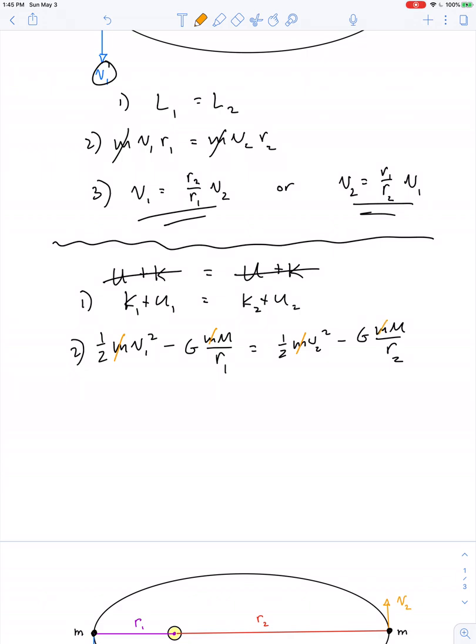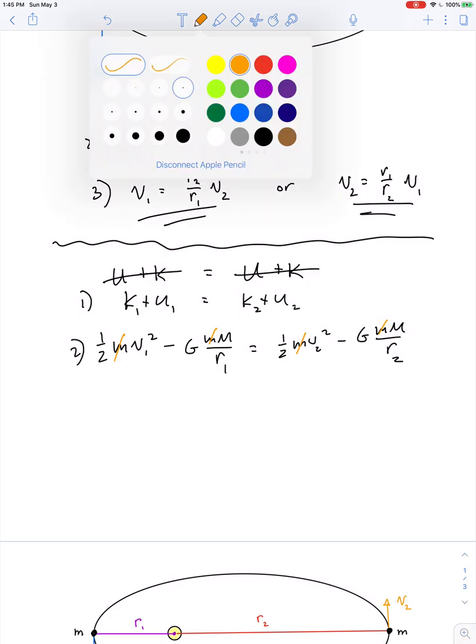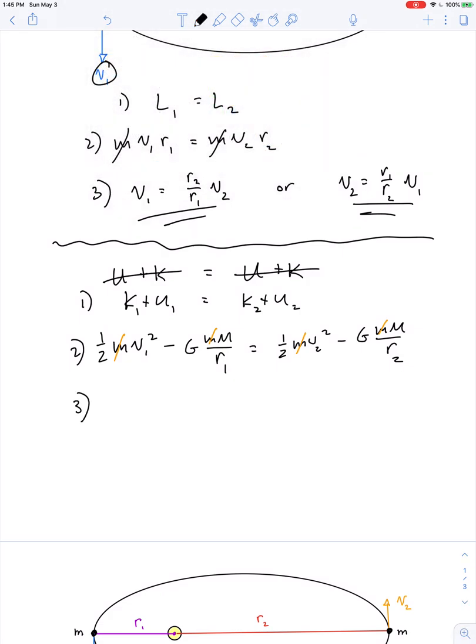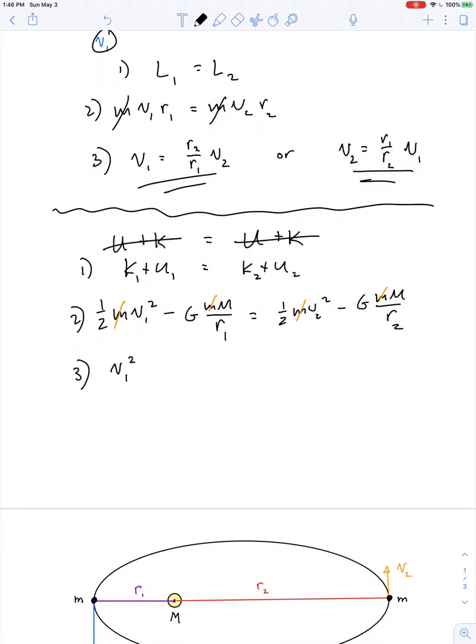M, the mass of the planet, appears in every term, so we can cancel that out. We can multiply through by 2 as well. V1 squared minus 2 GM over R1 equals V2 squared minus 2 GM over R2. V1 squared minus V2 squared is equal to 2 GM times the quantity 1 over R1 minus 1 over R2.